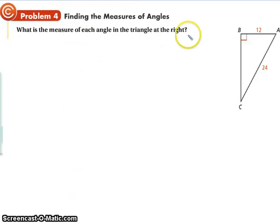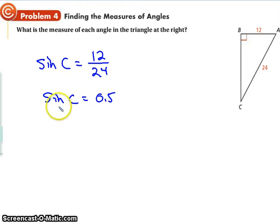Now it asks us to find the measure of each angle of the triangle. Well, we already know one of them, so once we find the other one we can just kind of figure it out. We're given the hypotenuse and then we're given this side, side AB, the length. So let's say we want to find C. Looking at C, I know it's opposite and I know it's hypotenuse, so the sine of C is equal to 12 over 24, so the sine of C is equal to 0.5.